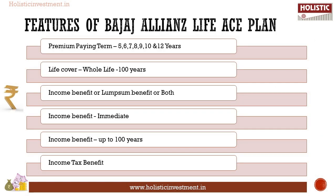First, the features of Bajaj Allianz Life IS: choice of paying premium for 5, 6, 7, 8, 9, 10, or 20 years; protect your loved ones with life cover throughout the policy term up to 100 years; you can choose between the income option or lump sum benefit, or even both; choose to receive income from the first month or after a fixed period based on your need; income benefits could be level income or increasing; and you have the option to receive income for a limited period or up to 100 years of age.